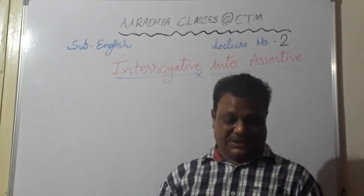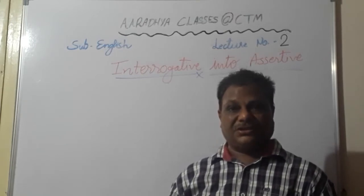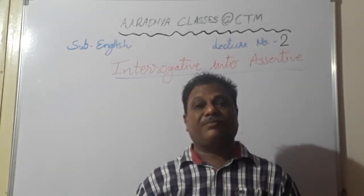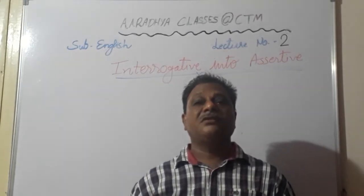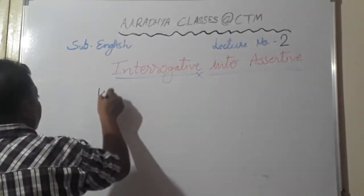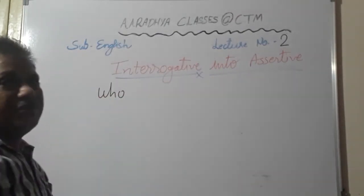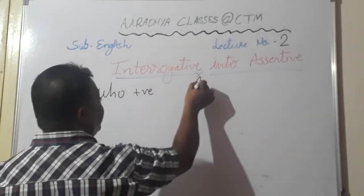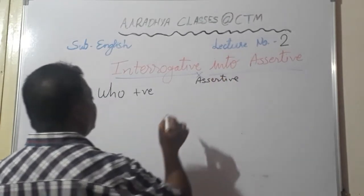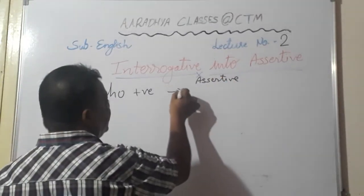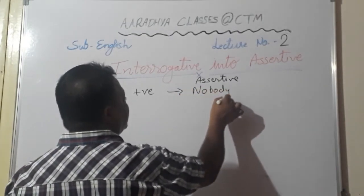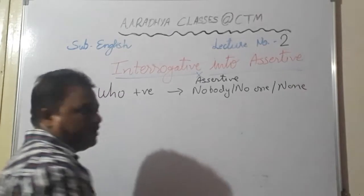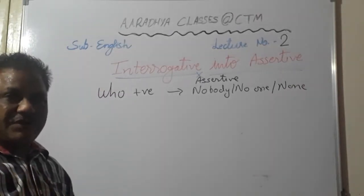Today we will see sentences known as WH questions — how to convert a WH question into assertive. WH questions can also be positive or also negative. We begin with the 'who' question. When the who question is positive, you don't have to do much — just in place of 'who,' begin the sentence with 'nobody,' 'no one,' or 'none.' The remaining sentence stays as it is; the tense will not change.